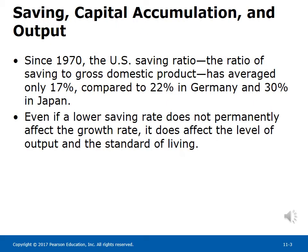Since 1970, the U.S. saving ratio — the ratio of saving to gross domestic product — has averaged only 17%, compared to 22% in Germany and 30% in Japan. Even if a lower saving rate does not permanently affect the growth rate, it does affect the level of output and the standard of living.